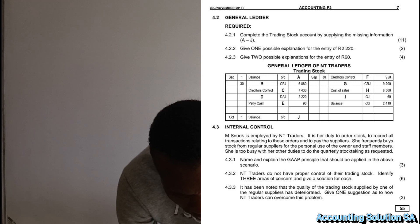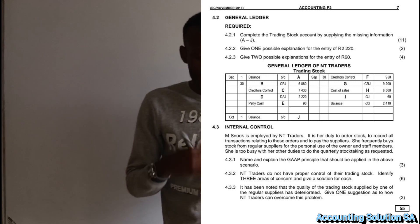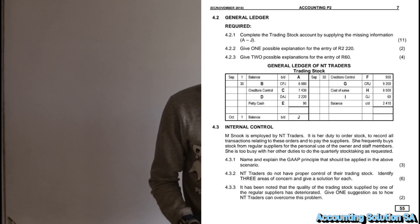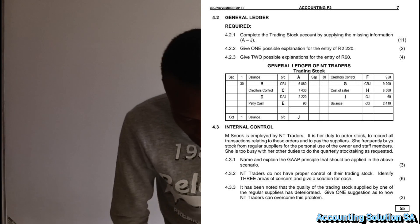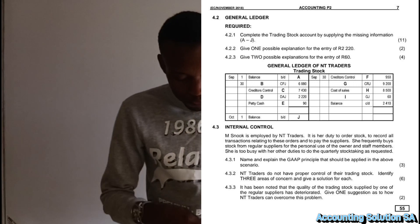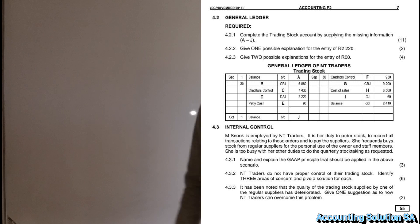Without wasting any other time guys, let's go straight to the question paper and answer our questions. So this question paper is more focused on the general ledger account. Then we have 4.2.1, they said we have to complete the trading stock account by supplying the missing information from number A to J.